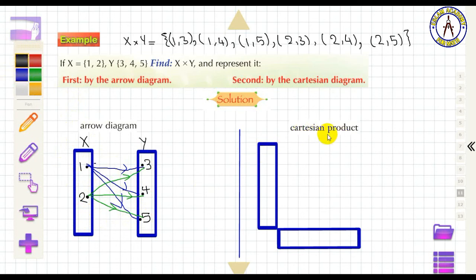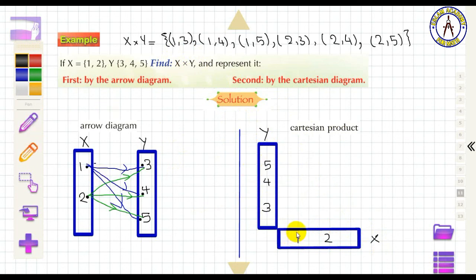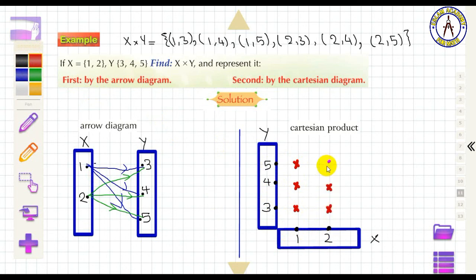To represent by a Cartesian diagram for X × Y, write X on the horizontal axis and Y on the vertical axis. Plot the points: (1,3), (1,4), (1,5), (2,3), (2,4), and (2,5).